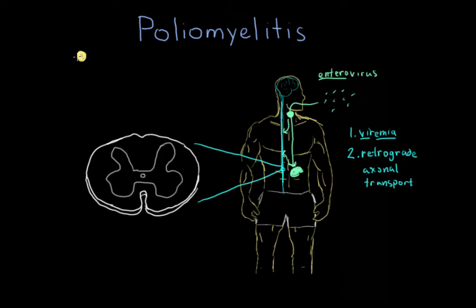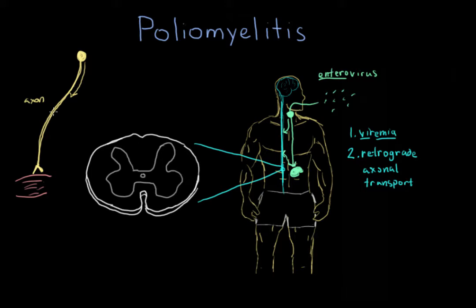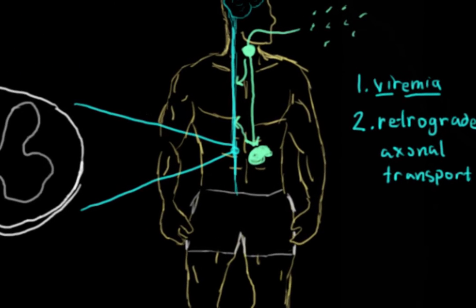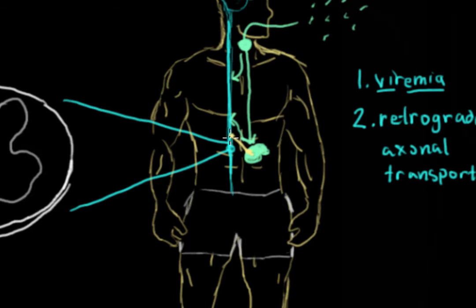Every cell has a cell body. What's special about neurons is they have this long tail — a long pathway we call an axon. The axon is how nerves transport information; they send electrical impulses down the axon, and at the terminal there's a chemical reaction that passes this information on to muscles or other nerves. The idea is the poliovirus gets into this axon and travels up to the cell body, where it does its replication and damages the neuron. Neurons serve as a highway from the site of replication to the spinal cord.